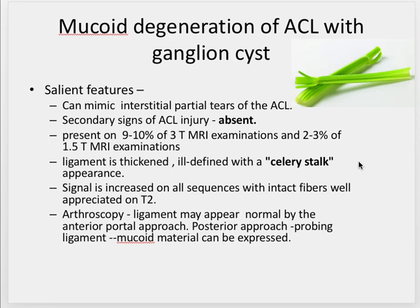Coming to arthroscopy, usually the ligament appears normal if you go through the anterior approach. When you go through the posterior approach, on probing the ligament, mucoid material can be expressed — which is the only feature described on arthroscopy that will suggest mucoid degeneration of the ACL.